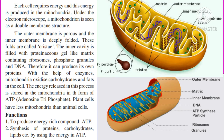The inner cavity is filled with a proteinaceous, gel-like matrix containing ribosomes, phosphate granules, and DNA. Therefore mitochondria can produce their own proteins. Mitochondria contain their own DNA. With the help of enzymes, mitochondria oxidize — meaning combine with oxygen — carbohydrates and fats in the cell. The energy released in this process is stored in the mitochondria in the form of ATP, which stands for adenosine triphosphate.